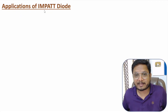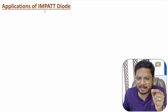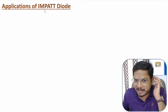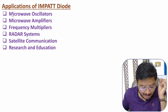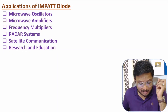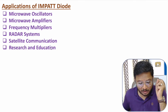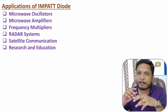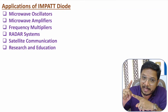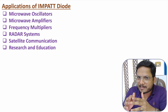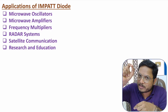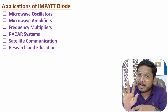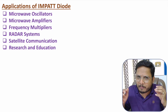Because IMPATT diode has negative resistance characteristics, lower reverse recovery time, and faster switching speed, it can be utilized in microwave signals. Applications include microwave oscillator, microwave amplifier, frequency multiplier, radar systems, satellite communication, and research and education. These applications are based on its high power handling capacity and microwave frequencies, since it functions on the verge of breakdown where humongous current flows.